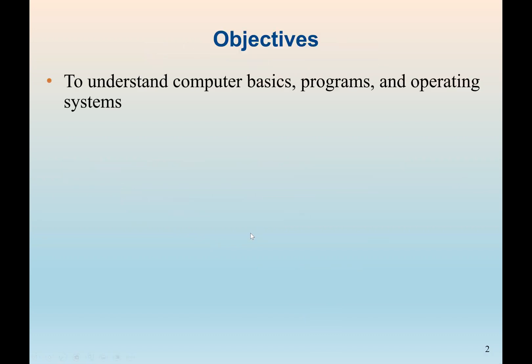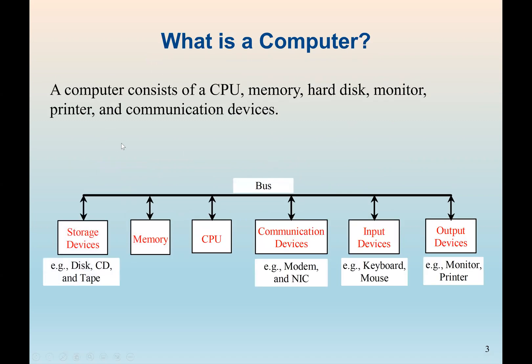Our main objective is to understand computer basics, the computer components or elements, also the programs and operating system. So here we see a computer consists of a CPU, memory, hard disk, monitor, printer, and communication devices.